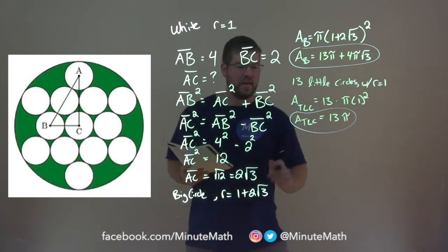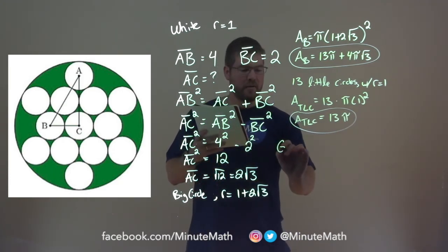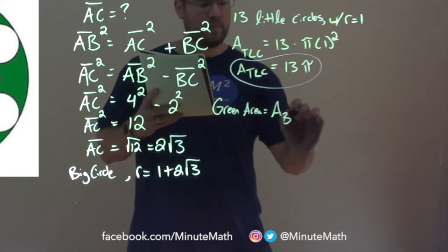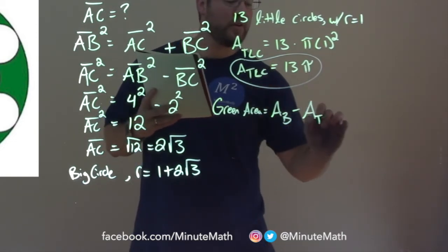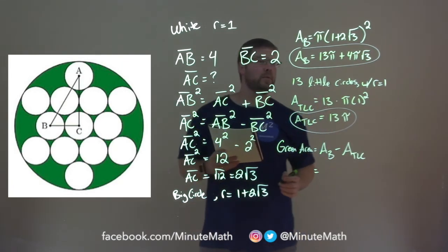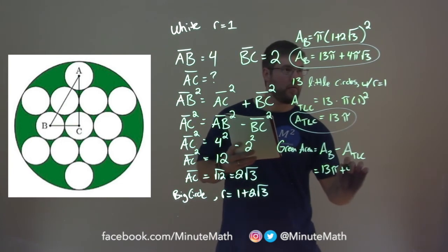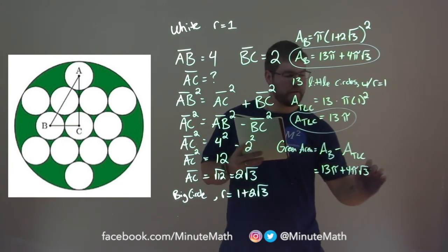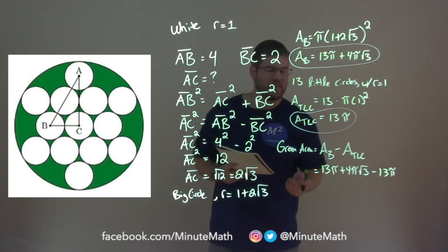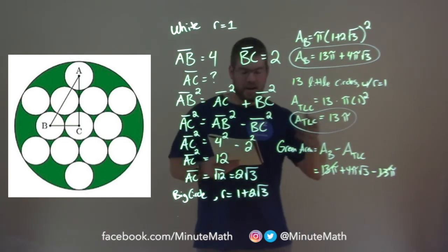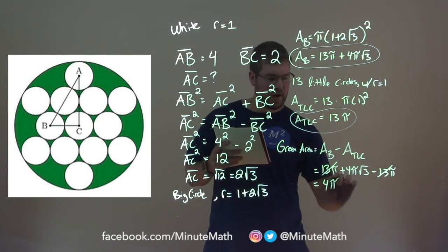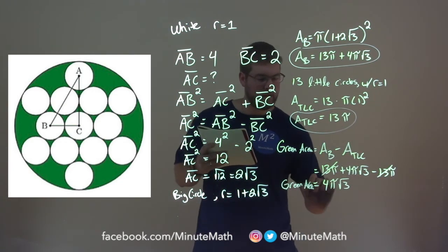So we're basically there. We have our green area we want to find, is equal to the area of the big circle minus the area of the total of the little circles, or the white circles. And so that equals, well, the area of the big circle we said was 13 pi plus 4 pi square root of 3, and the area of the little circles, well, that was just 13 pi. The 13 pis just cancel, and we have our answer here. Our green area is 4 pi square root of 3, and there we have our answer.